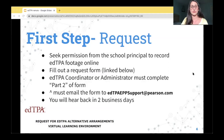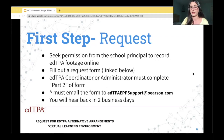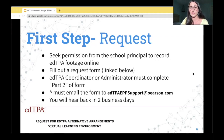That leads me to the first step, which is requesting. Once you are 100% sure that you can or already do use synchronous instruction, you must ask permission from the school principal to record your edTPA footage online. As long as they approve, you can move on to Pearson's request form. The next step is to fill out a request form, which I will link below. In order to be considered for alternative arrangements in a virtual learning environment by Pearson — which just means completing your edTPA via remote learning — you must fill out and submit this request form. It's very straightforward, so don't be alarmed.